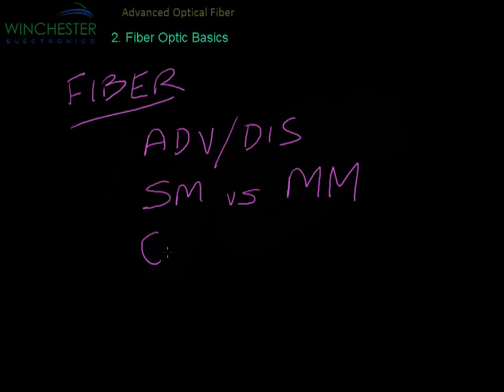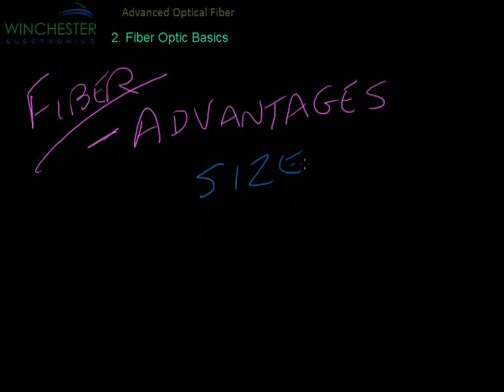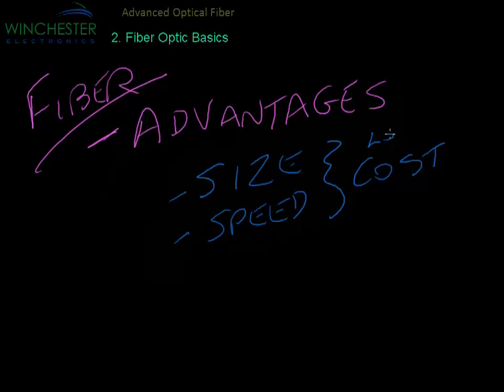One of the main advantages is size. Fiber optics are a lot smaller than copper for the same amount of communication capacity. The other advantage is increased bandwidth, or speed of the signal that can go down the actual fiber optic cable.